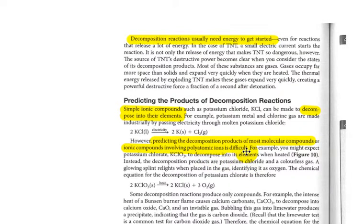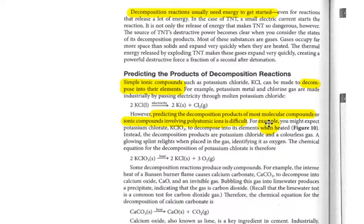However, predicting the decomposition products of most molecular compounds can be difficult. For example, KClO3, you may think it's KCl and O, but it actually is KCl and O2, so we have to be aware of that. It's not as easy as a compound in which we simply have a metal and a non-metal together.